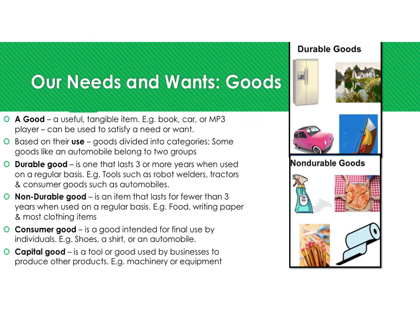Let's talk about goods. A good is always going to be tangible, meaning it can be touched — you can hold it in your hand, get into it, or walk into it. A good is a physical, tangible item. Based on their use, we categorize them.